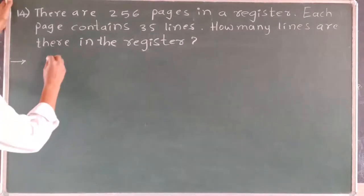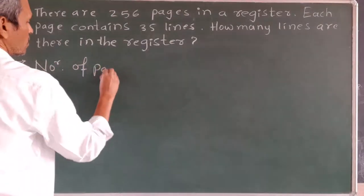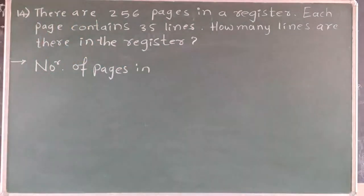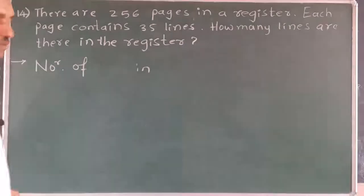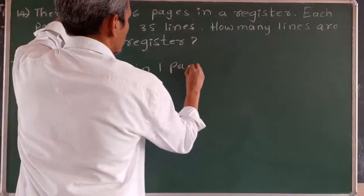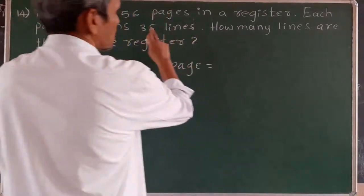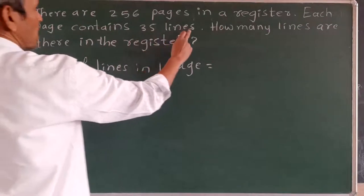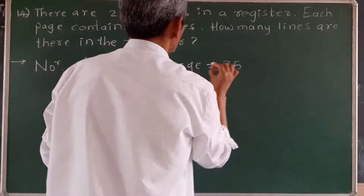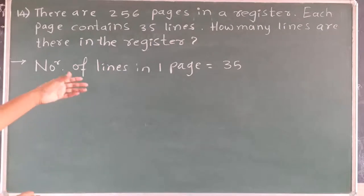Now we will write the data like this. Number of lines in one page is 35, as given: each page contains 35 lines means one page contains 35 lines. You should modify some words while writing data so that it can be easily understood. Here, each page contains 35 lines means number of lines in one page is 35.